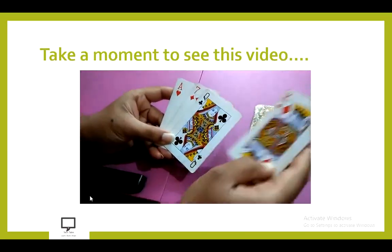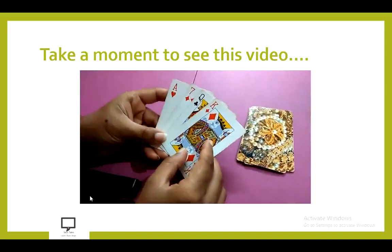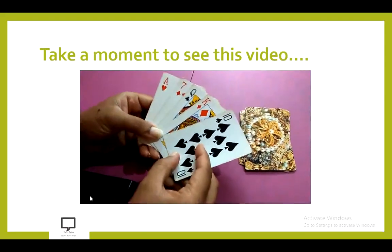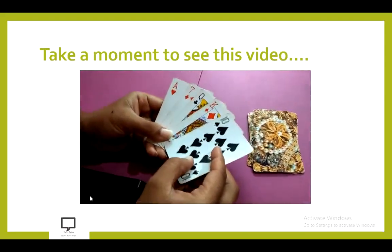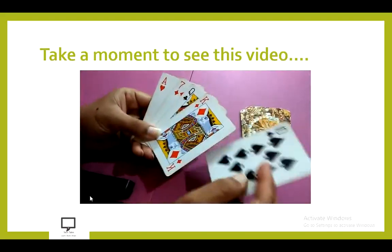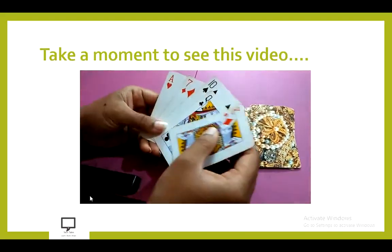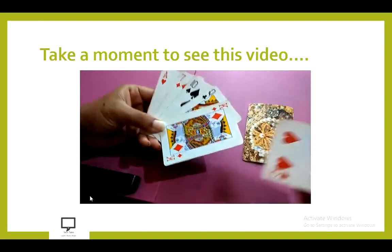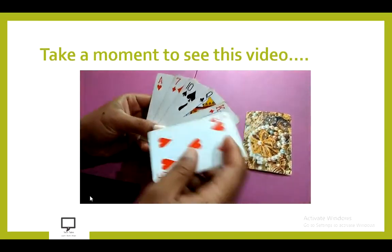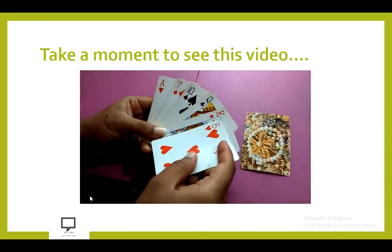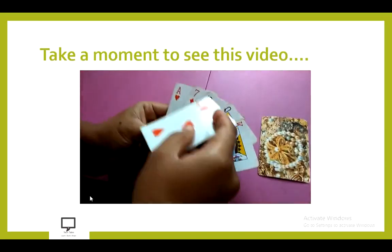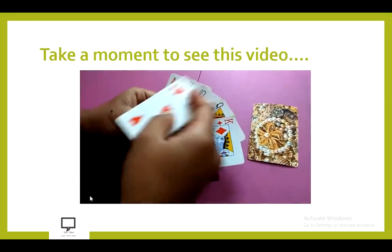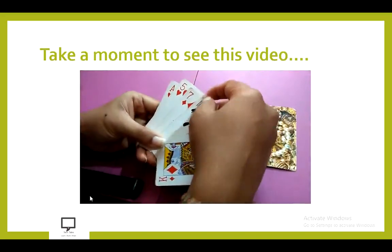Now let's take the next card — king is the largest card, so we put it at the last position. Now the next card is 10. 10 is compared with king, then compared with queen, and it is less than queen but greater than 7, so we put it after 7 and before queen. Now the next card is 5. 5 is compared with king, queen, 10, and 7 — it is less than all of them — but greater than 1, so we insert it after 1 and before 7.